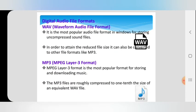Next is digital audio file format. We are going to discuss WAV, MP3, OGG, AIFF, WMA, and RA formats. WAV — Waveform Audio File Format — is the most popular audio file format for Windows. It stores uncompressed sound files. It is an uncompressed file. In order to reduce file size, it can be converted to other formats like MP3.